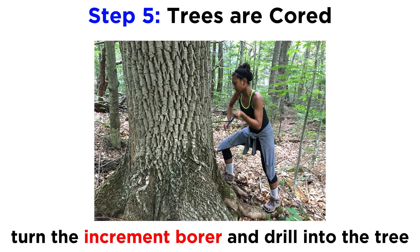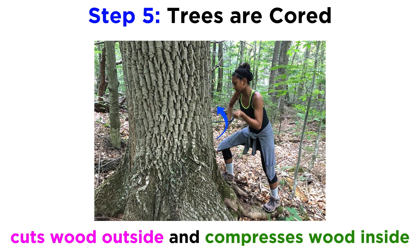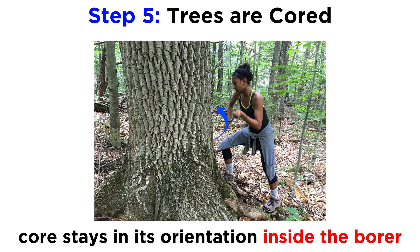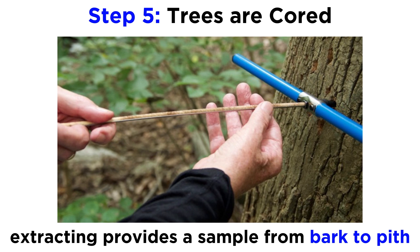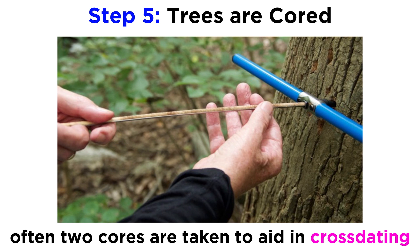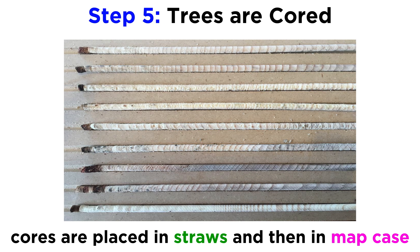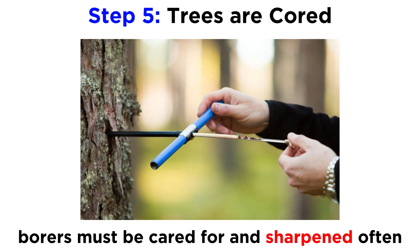To successfully core a tree, a dendrochronologist turns an increment borer to drill into the tree. As the borer is turned, it cuts away the wood around it and compresses the wood away from it, so the core stays in its original orientation. This fills the borer so that when it is extracted, you have a full sample of rings from the bark to the pith. Dendrochronologists often take two cores from an individual tree to aid in cross-dating. The extracted core is placed into a straw, labeled, and carefully stored in the map case for later analysis. An increment borer must be properly cared for in the field and sharpened and cleaned when not in use.